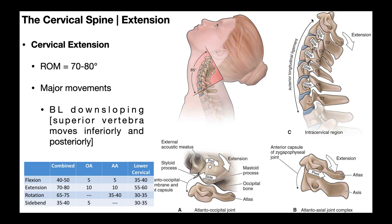With the nuchal ligament now in laxity, the anterior longitudinal ligament is now on tension. In fact, one of the limiting factors for extension is the tension in the anterior longitudinal ligament. Another limiting factor is the approximation of the spinous processes — if these spinous processes start bumping into each other, you can't go any further.